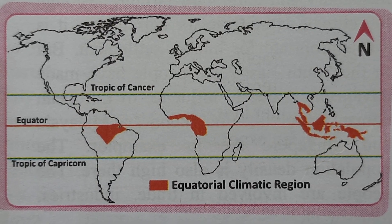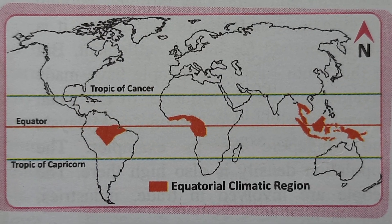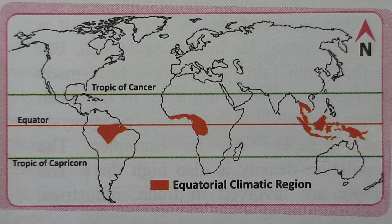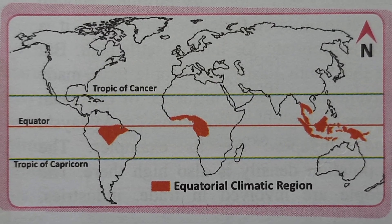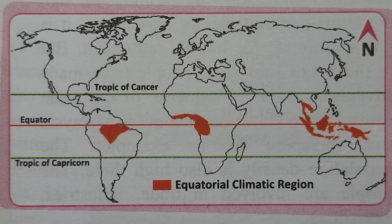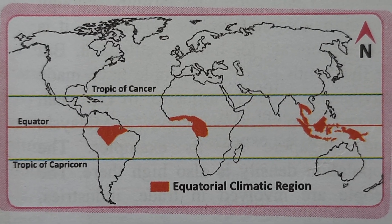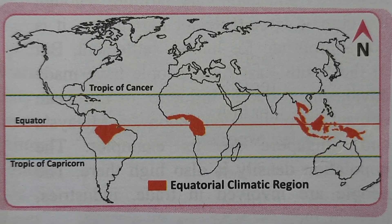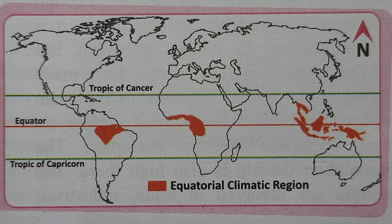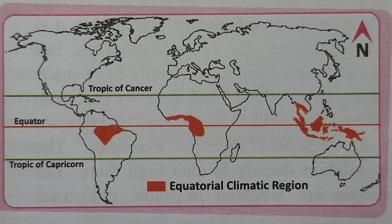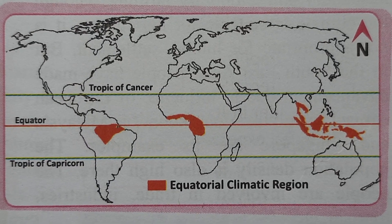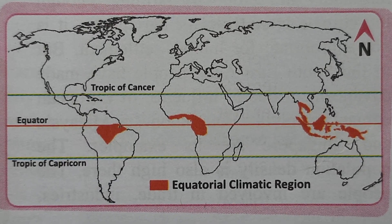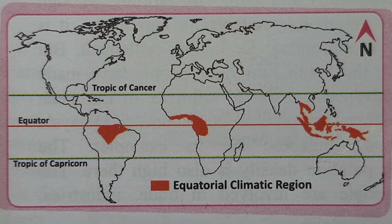Right now I am talking about differences between equatorial climate and tropical grassland climate. In terms of equatorial climate, it is extended from 0 degree to 5 degree latitude in both hemispheres.